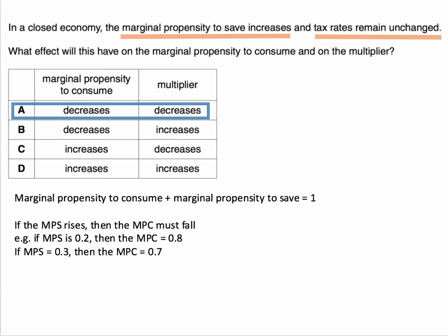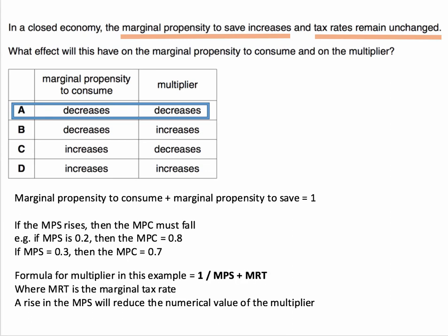What about the multiplier? In this situation we can ignore tax. We've only got two leakages from the circular flow to build into our formula. The formula for the multiplier in this example is 1 divided by the two leakages: the marginal rate of tax (MRT) plus the marginal propensity to save. We're told that tax rates remain unchanged, so MRT stays the same, but MPS has gone up. Therefore, the denominator will have gone up. A rise in the MPS will mean that the numerical value of the multiplier will have gone down — it's 1 divided by a bigger number.